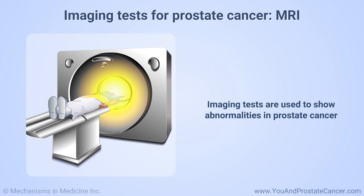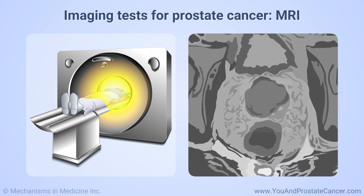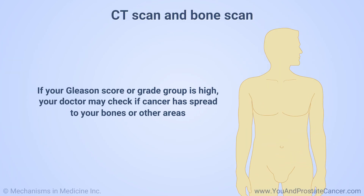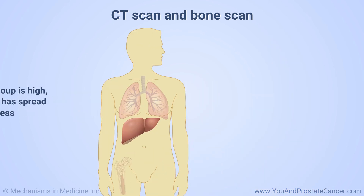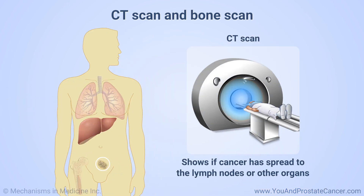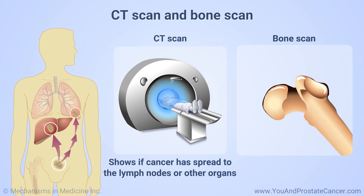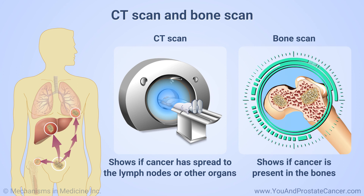Imaging tests are used to show abnormalities in prostate cancer. For example, an MRI can show possible cancerous areas of the prostate and help decide if you need a biopsy. It can also show if cancer has spread. If your Gleason score or grade group is high, your doctor may check if cancer has spread to your bones or other areas. A CT scan can show if it has spread to the lymph nodes or other organs, and a bone scan can show if it is present in the bones.